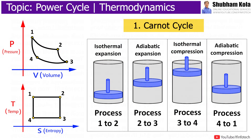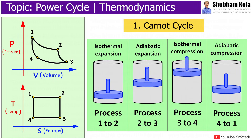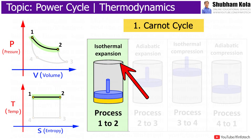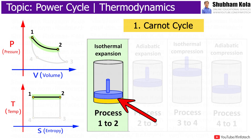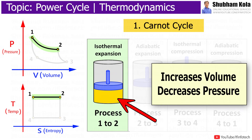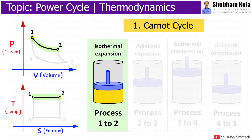Let's discuss how the Carnot cycle works by exploring its four thermodynamic processes. Process 1 to 2 is the reversible isothermal expansion process, where isothermal means temperature is constant. During this process, the amount of heat absorbed by the ideal gas is Q-in from the heat source at temperature TH. The gas expands, increasing volume and decreasing pressure, and does work on the surroundings.